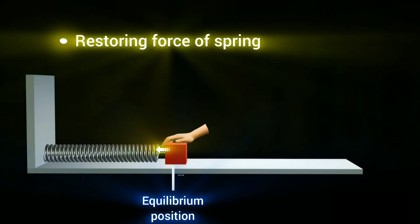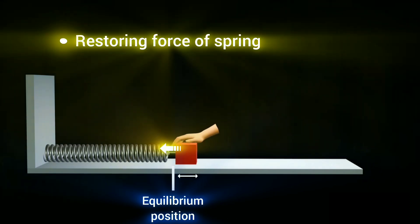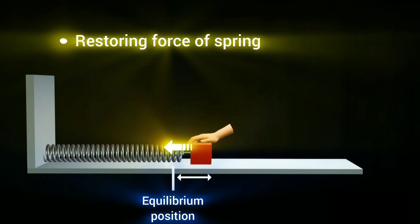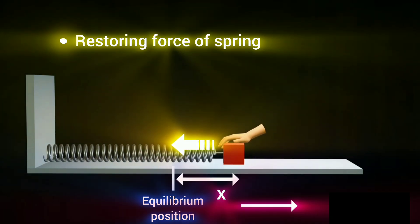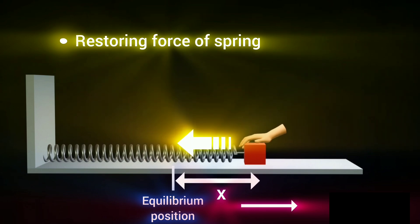As the block deviates from its equilibrium position, the spring undergoes elastic deformation, generating an internal restoring force that opposes the block's displacement. The magnitude of the restoring force is directly proportional to the distance from the equilibrium position.